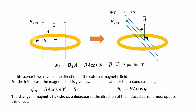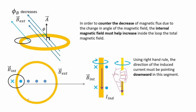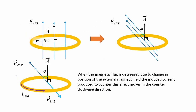In this scenario we change the direction of the magnetic field with respect to the area vector of the loop but in reverse. For the initial case the magnetic flux is at maximum, and later when it is tilted the flux is at some angle. The change in magnetic flux shows a decrease, so the direction of the induced current must oppose this effect. The internal magnetic field must help increase the total magnetic field inside the loop. Using the right hand rule, the direction of the induced current must be pointing downward in this segment. The induced current moves in the counter-clockwise direction.